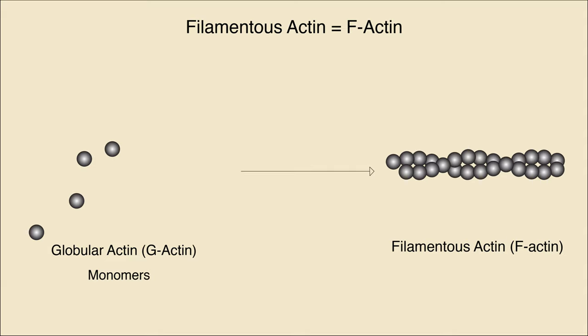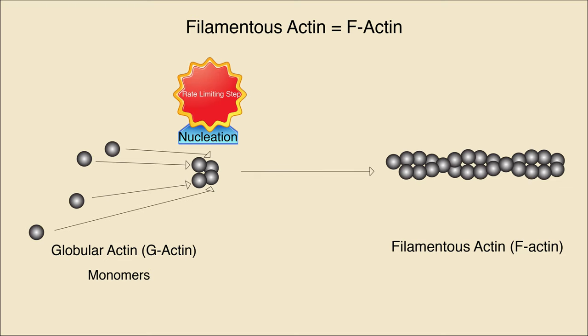To form actin filaments, G-actin monomers first bind together to form tetramers in a process called nucleation. This is the rate-limiting step in actin filament formation. Once nucleation has occurred, more G-actins can rapidly bind to lengthen the filament.